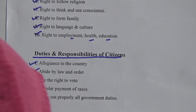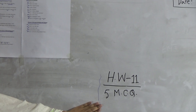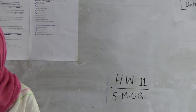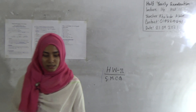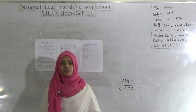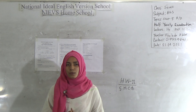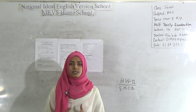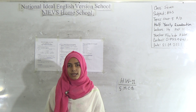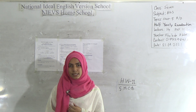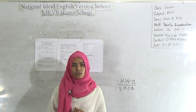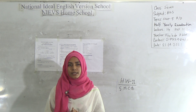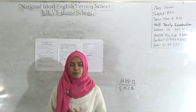You have a homework assignment, HW number 11. You will make 5 MCQs from this chapter and submit at Saturday from 9 am to 3 pm. Dear students, hope you have understood today's topic. The topic was about citizens of Bangladesh — what are the qualities by which a person can be a good citizen, and what are the duties, rights, and barriers. We all need to be good citizens to be a part of the betterment of our country, and everybody will practice good qualities and try to remove the barriers from society.